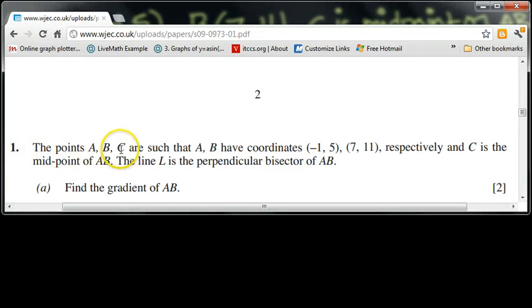Question 1. Let's have a look at this one. The points A, B and C, such that A and B have coordinates minus 1, 5 and 7, 11, respectively, and C is the midpoint of AB. The line L is the perpendicular bisector of AB.